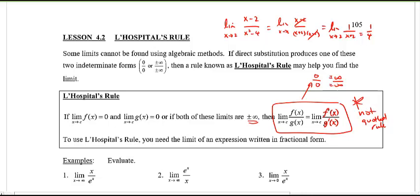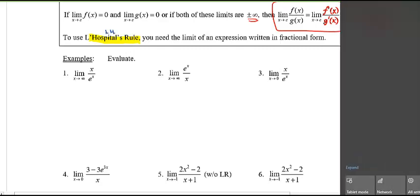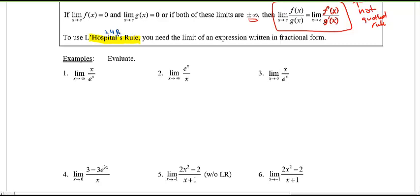I don't really like seeing 0 over 0 written casually, because it's not really mathematically correct. Let me show you how you should be properly writing this out, especially for those of you writing the AP exam, because they will be looking for proper notation. To use L'Hôpital's Rule — sometimes we call it L'HR — you need the limit of an expression written as a fraction. If it's not in a fraction form with f(x) on top and g(x) on the bottom, we can't use it.